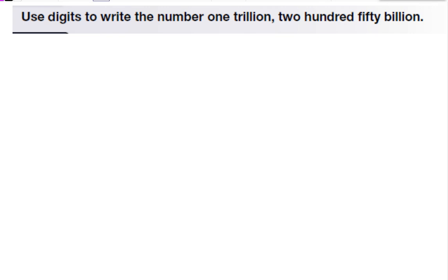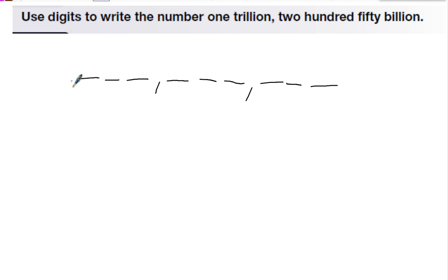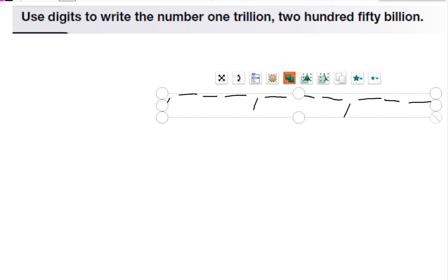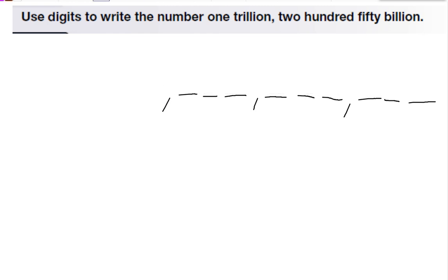The next problem says: use digits to write the number one trillion, two hundred fifty billion. When writing big numbers, it helps to sketch the pattern first. So we have units, thousands, millions, billions, trillions.